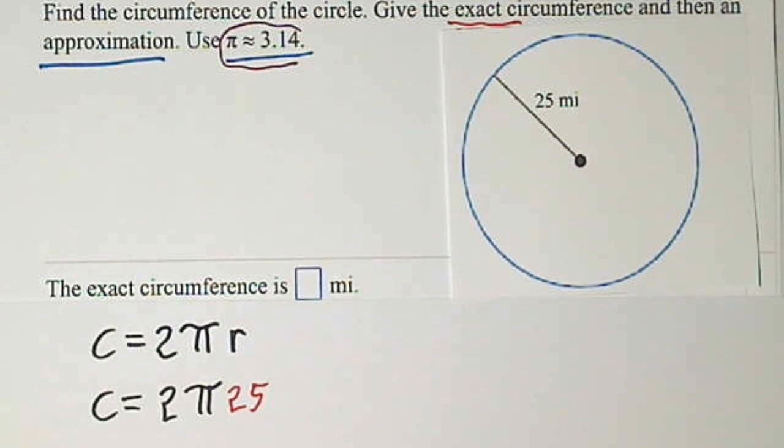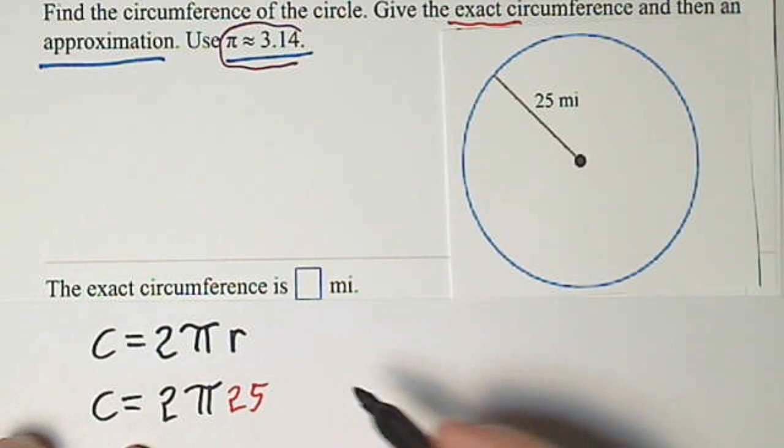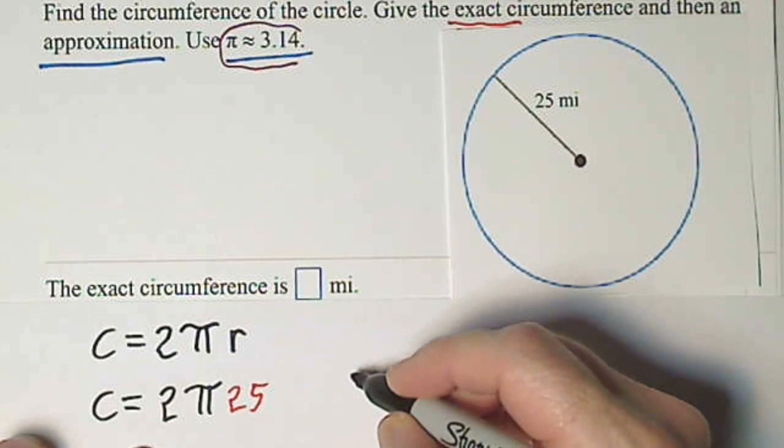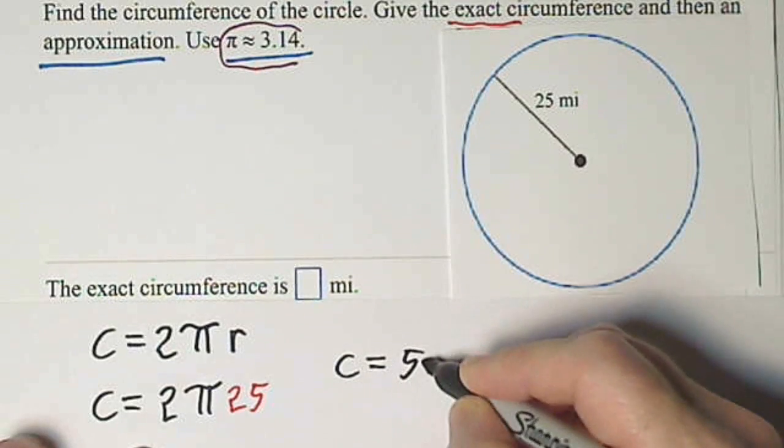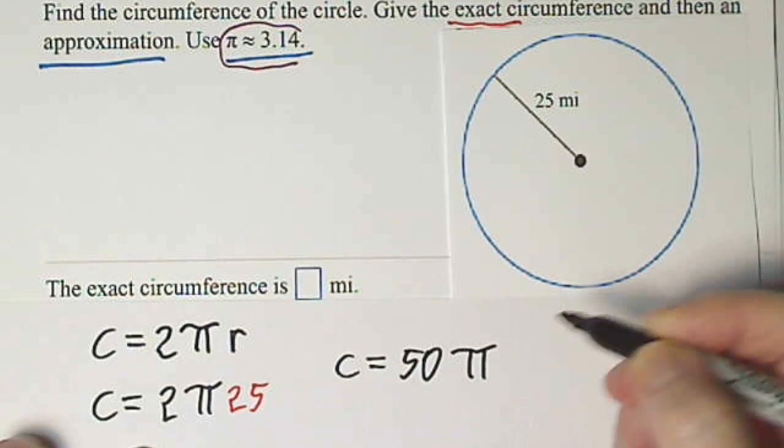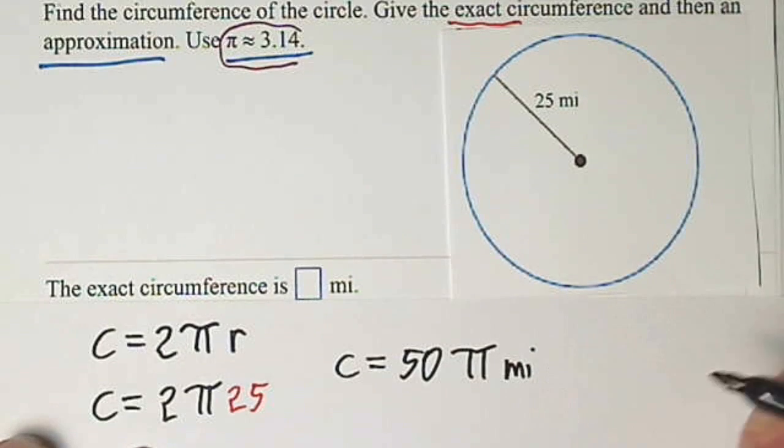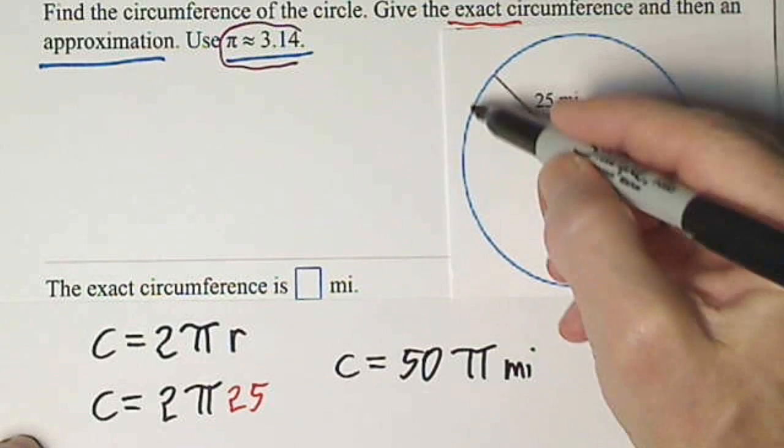So we end up with, I'm sure you can see, 2 times 25 would be 50. So for the exact circumference, that's equal to 50 pi miles. Since the units are miles. That's the distance all the way around this circle.